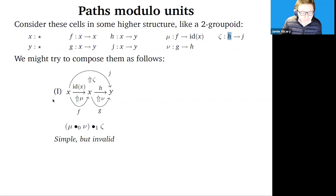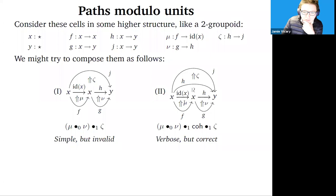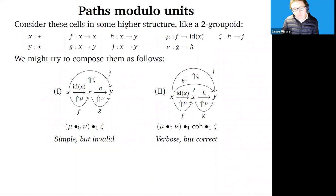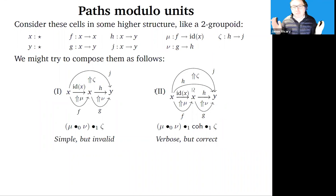What we'd have to do instead is compose mu and nu horizontally, then insert a coherent cell to account for the fact that the identity composed with h is not identical to h — it's merely isomorphic. After we've pushed in that coercion, we can then compose with zeta. That's correct, but obviously more verbose. There's a trade-off between simplicity and correctness. Presumably we'd choose correctness if we want to use computers to help with higher category theory.